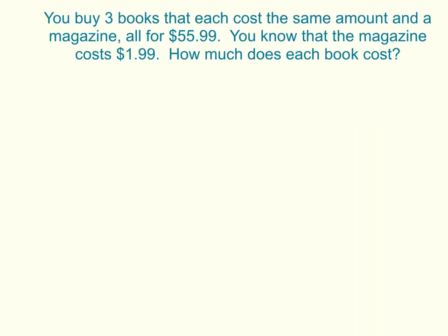Here's the first question. It says that you buy three books that each cost the same amount and a magazine. So three books and one magazine. And it all cost $55.99. You know that the magazine cost $1.99. And then the question is, how much does each book cost?